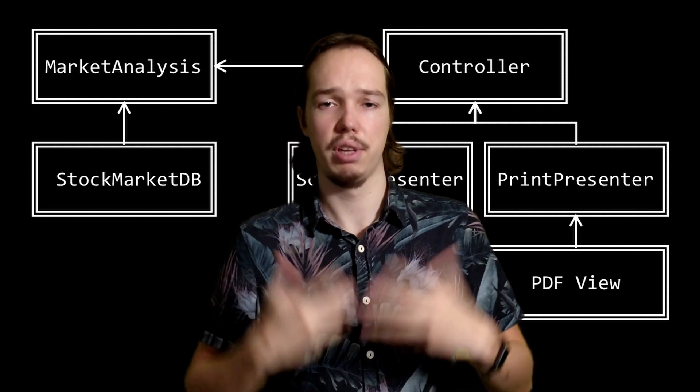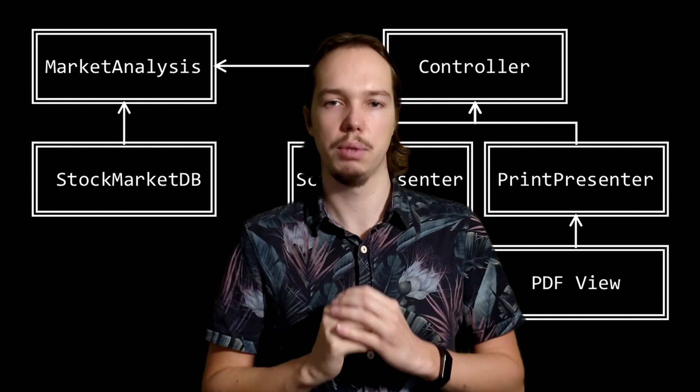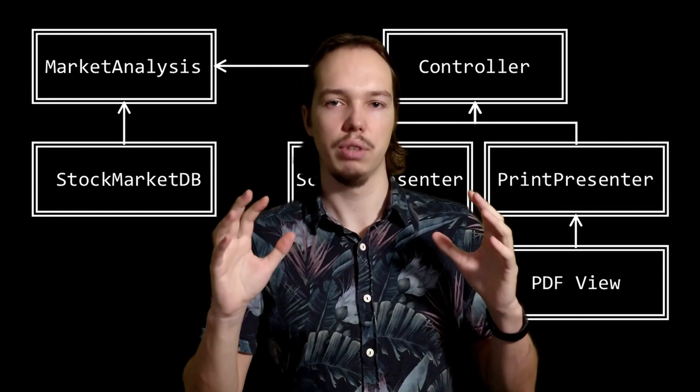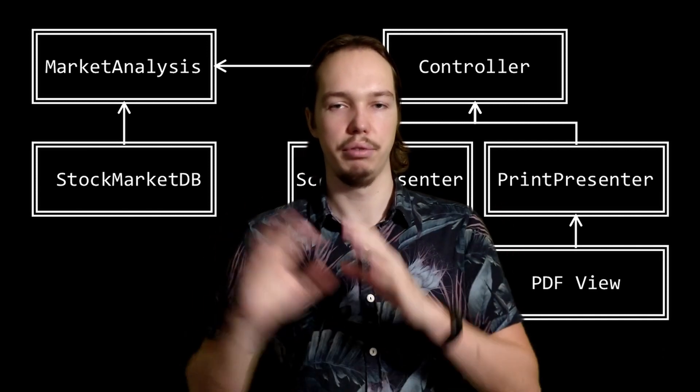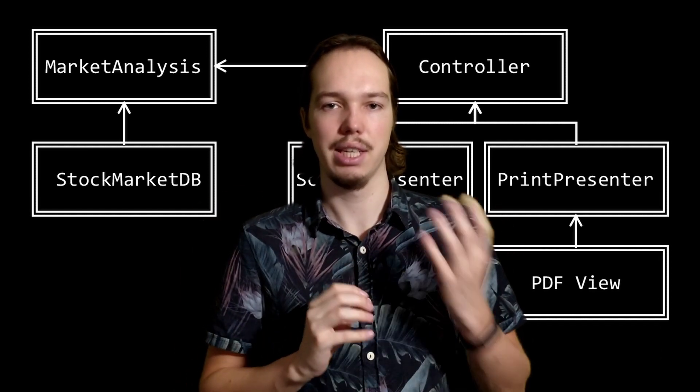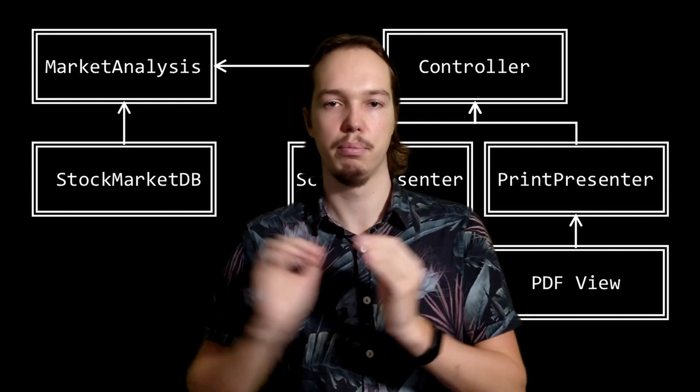So why did we decide to make this market analysis component so special? The reason is that the market analysis component deals with the central concern — it contains the highest-level policies, whereas all other components deal with peripheral concerns. Hence, that's the component we want to keep closed for modification and protect against changes in the rest of the system. By drawing a component diagram, you can start reasoning about dependencies and the application of the open-close principle at an architecture level without diving into separate classes.